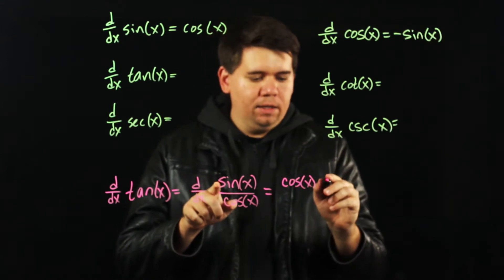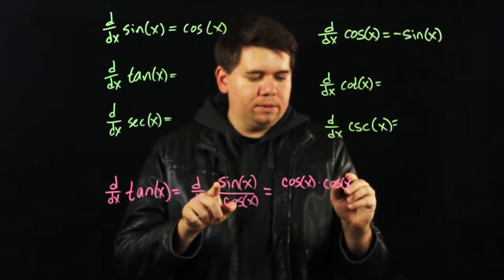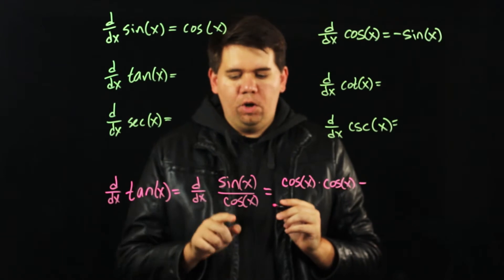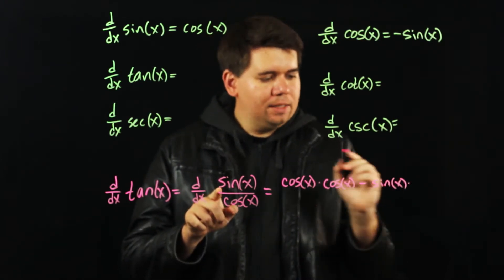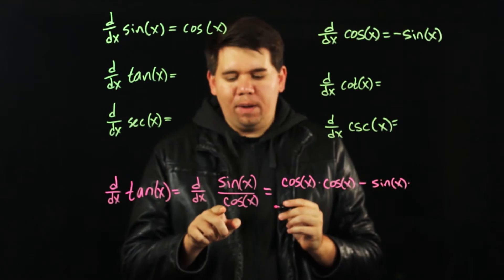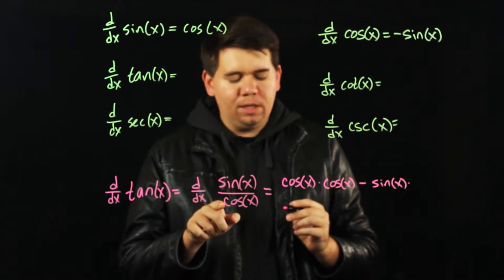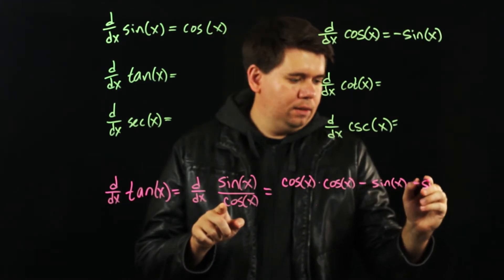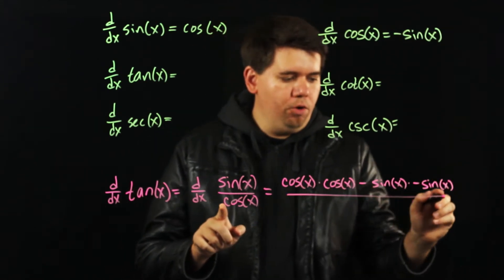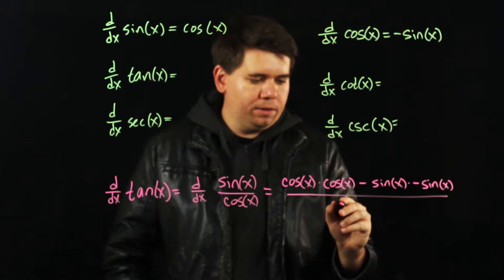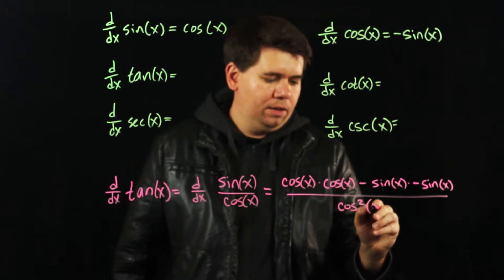The derivative of sine is cosine of x, minus hold the top, leave sine of x the same, and times it by the derivative of the bottom. The derivative of cosine is minus sine of x, and then all over the bottom squared, cosine squared of x.